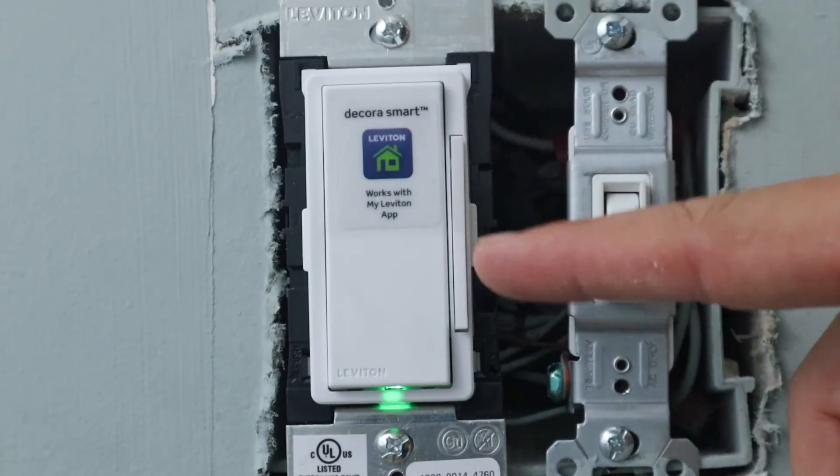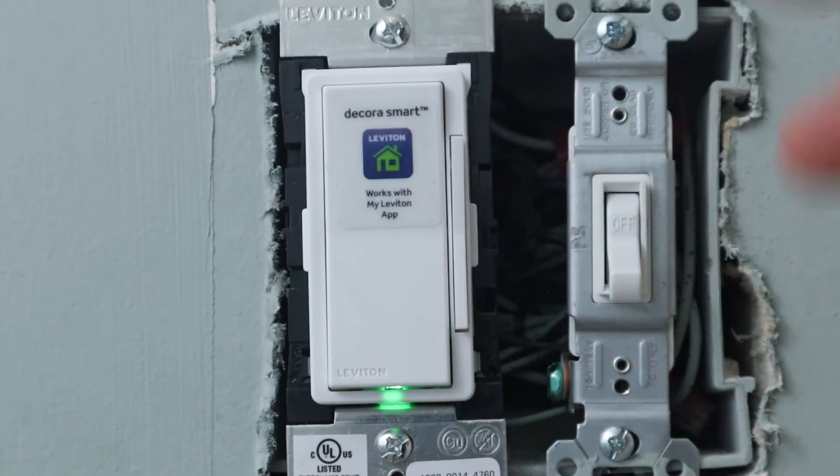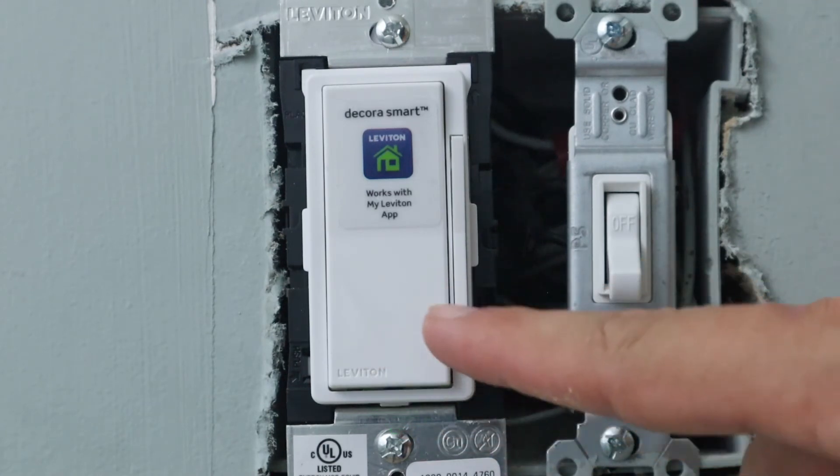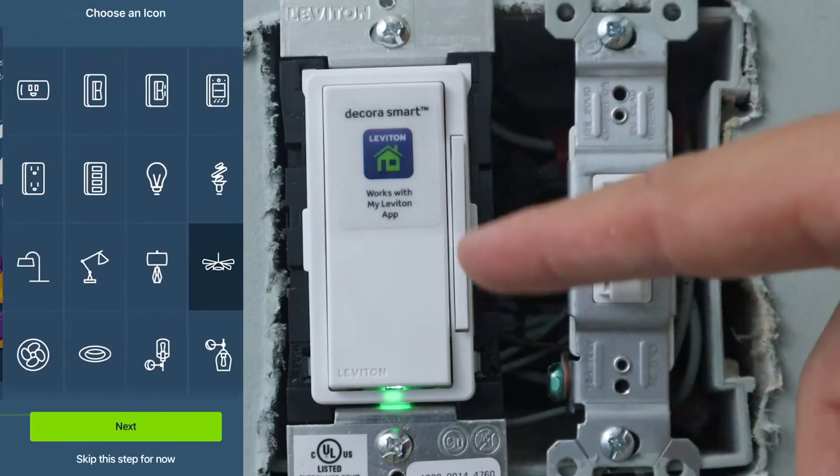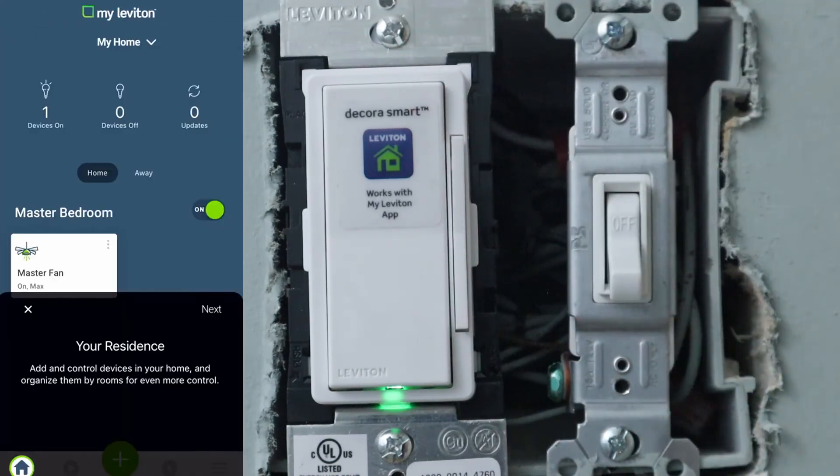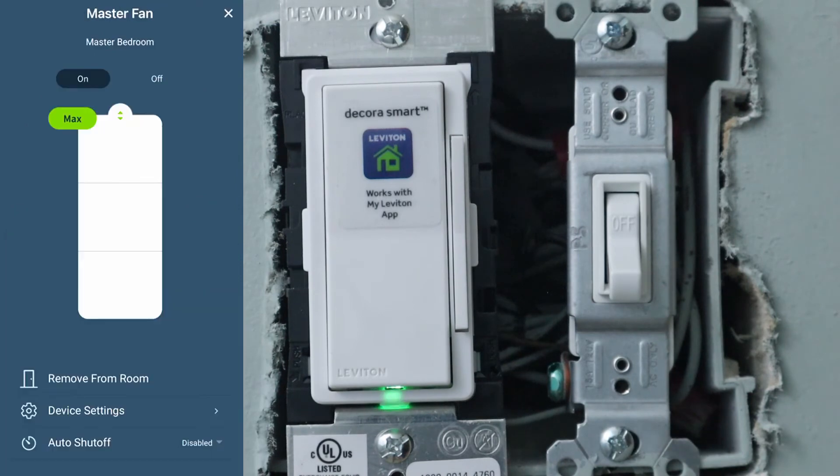All right, so now that I've shown you all the physical features of this smart fan switch, now you can go and download the My Leviton app. Once you've downloaded the app, that is where you're going to then be able to set everything up from connecting this switch to Wi-Fi and then also connecting the app and your phone to this switch so that you can control it from anywhere. All the instructions are very easy to understand. They'll walk you through step by step.